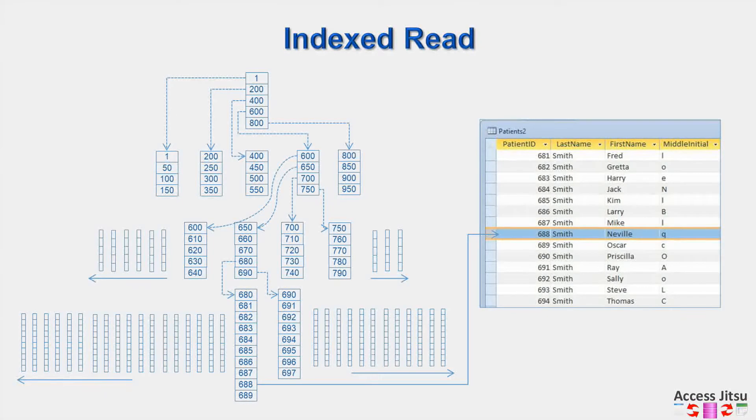We start at the top on the root node. So in our example here, we're looking for a patient ID of 688. And we start at the top in that root, what's called the root node. And we're looking for the value that is highest but lower than the value we're looking for. In this case, it's the value 600. That points to another set of index values where we do the same thing. 650 is the highest without going over the value we're looking for. And we've followed this structure all the way down: 680, 680, 688.